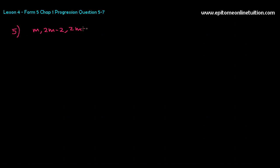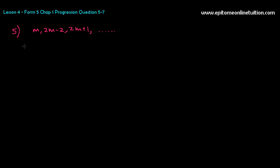Let us do question number 5. The first three terms of an AP are M, so let's write it out. And 2M minus 2, and 2M plus 1, and so forth. So this is an AP. The first term, second term, and the third term. And it says for A, find the value of M. So you're looking for M.